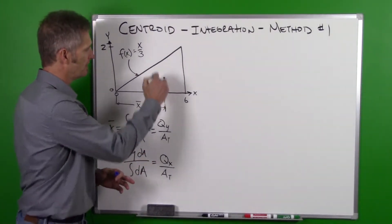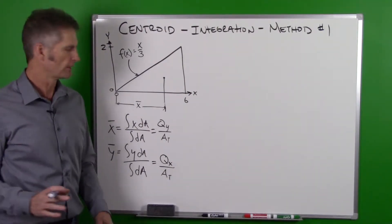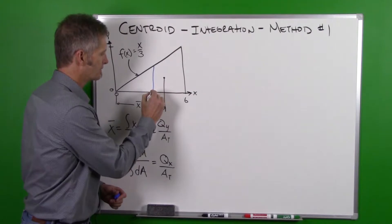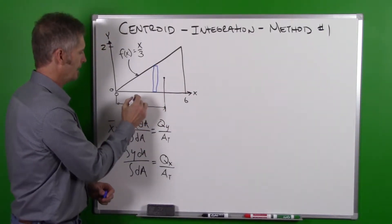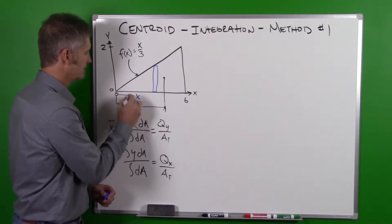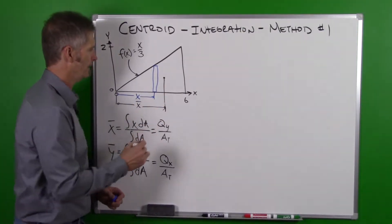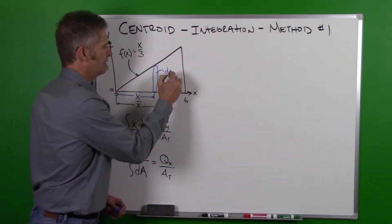So in this case there's multiple ways that we can set up our dA. We can make a vertical dA or we can make a horizontal dA. In this case to calculate x bar we're going to make a vertical dA. So it is going to look like this, and it's going to be at some distance x at that location right there. So this is our dA.